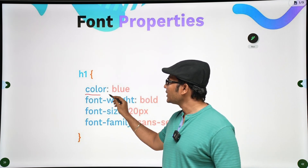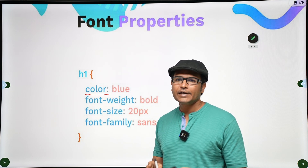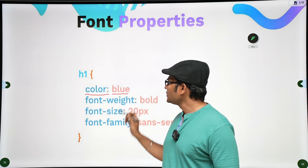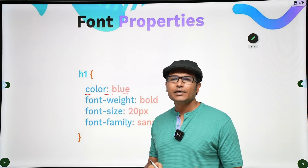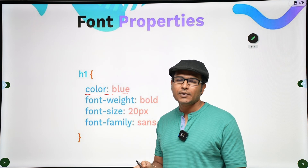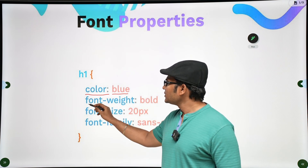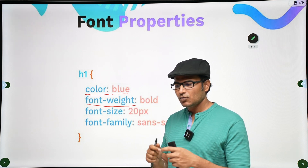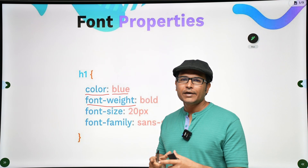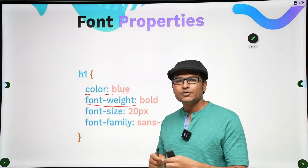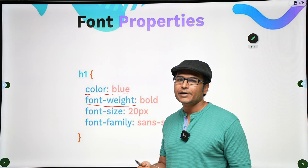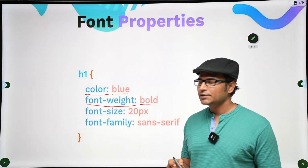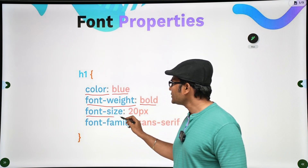Popular font properties: one is color - you can set the color of the text or the font to any color. These colors can be either named colors or you can also use the hexadecimal code. The next one is font weight, which decides how bold the font should look - should it be normal or should it be bolder?